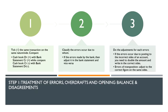Now let's go to the first step: treatment of errors, overdraft, opening balance and disagreements. In this step there are three sub-steps. First, you need to take the same transaction on the same nature or side. As I showed in the first video — in the cashbook or bank account, when an entry is on the debit side, you compare it with the bank statement on the credit side, because in the bank statement it is reversed.